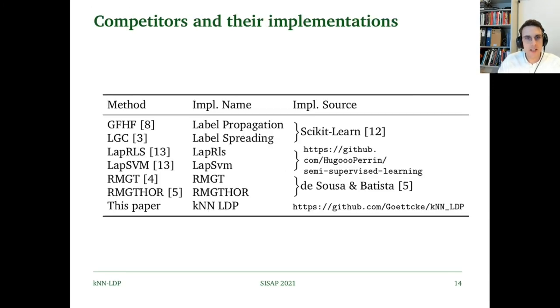Let's have a quick look at our competitors and their implementations. Both GFHF and LGC are available in Scikit-learn, so we grabbed those from there. LapRLS and LapSVM were found on Hugo Perrin's GitHub page, and they look like very reasonable implementations. RMGT and RMGT-Thor came from DeSouza and Batista. And finally, this paper was implemented by yours truly.